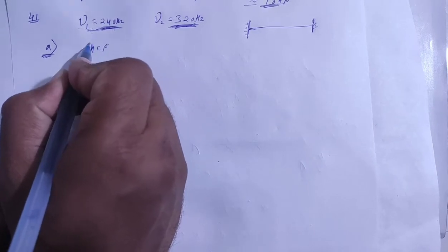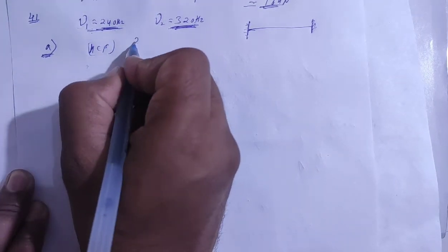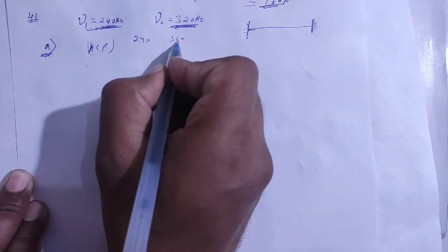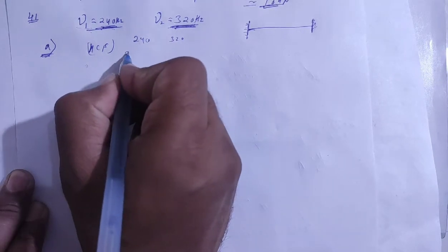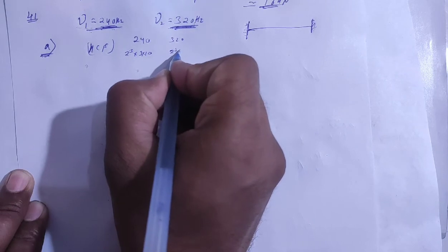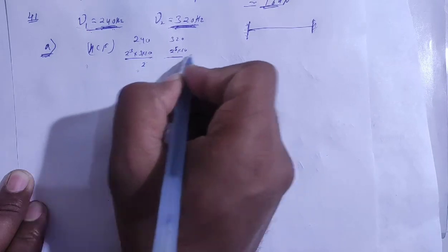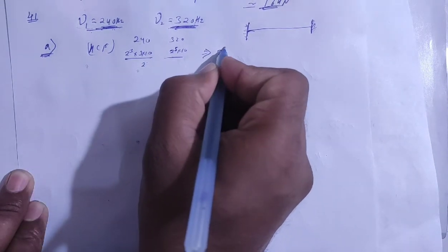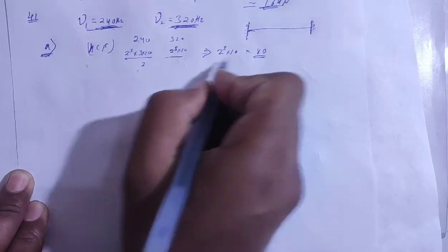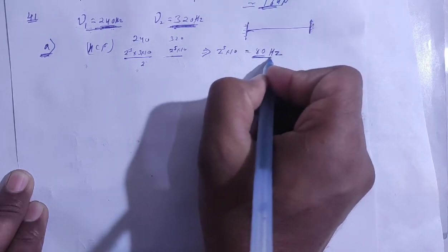The answer is the HCF — Highest Common Factor — of 240 and 320. We factorize: 240 = 2³ × 3 × 10, and 320 = 2⁵ × 10. The common factor is 2³ × 10 = 80. So the highest common factor is 80, and the maximum fundamental frequency is 80 hertz.